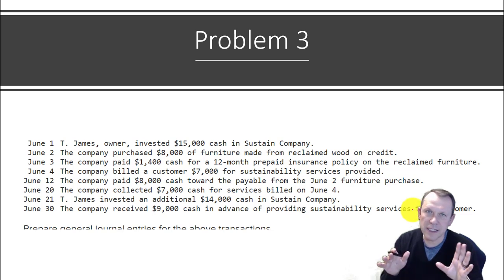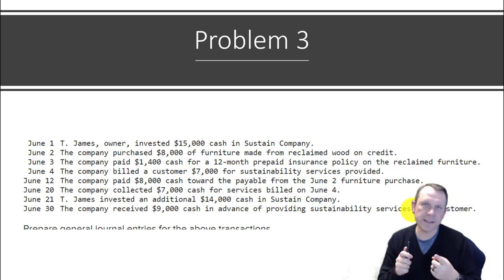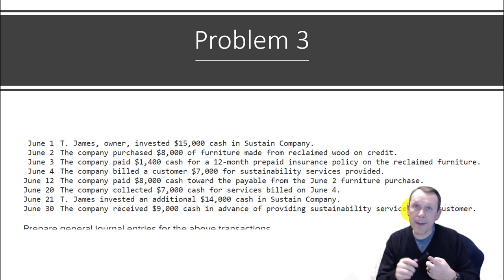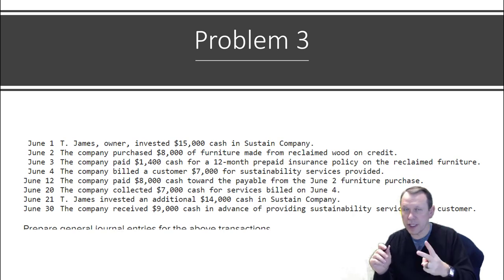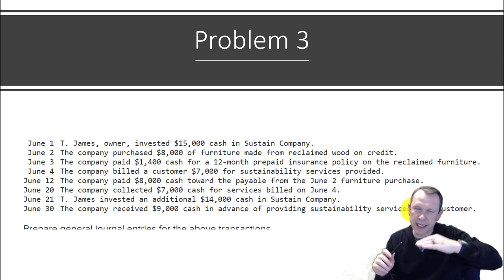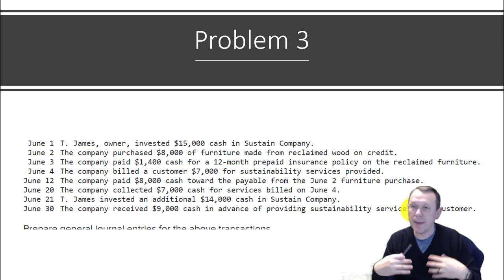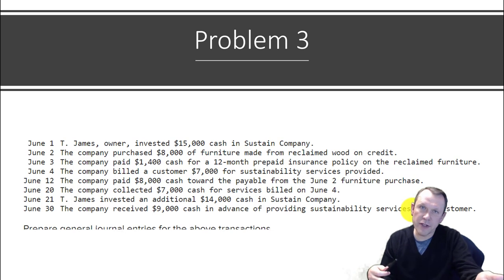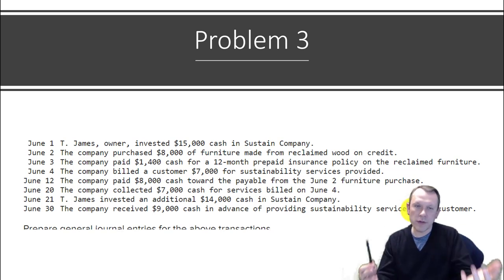These next few problems are going to be journal entries, so we've got to follow the journal entry format. You've got to have at least one debit and one credit — at least one. You may have multiple on either side or both sides, but you've got to have at least one debit and at least one credit. There may be some exceptions, but that's the general rule.